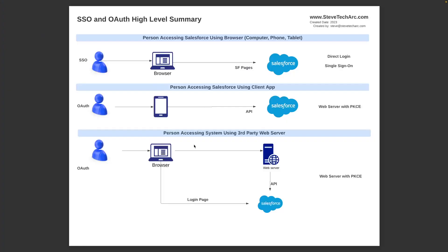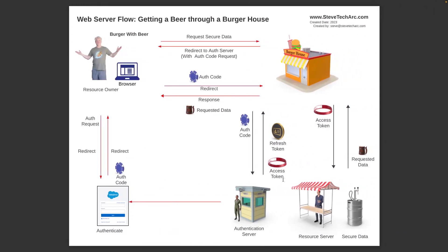In this OAuth flow summary, we're talking about the web server flow: the browser, the user going to the web server, and then to act on behalf of a user, we're presenting the Salesforce login screen to the user and then being able to receive an access token. If we look right here, this was a previous flow using the Beer Garden analogy, where we had the browser going to the Burger House. The Burger House is the third-party web server, and would redirect the user to the login screen, and then the user would approve the request and authenticate.